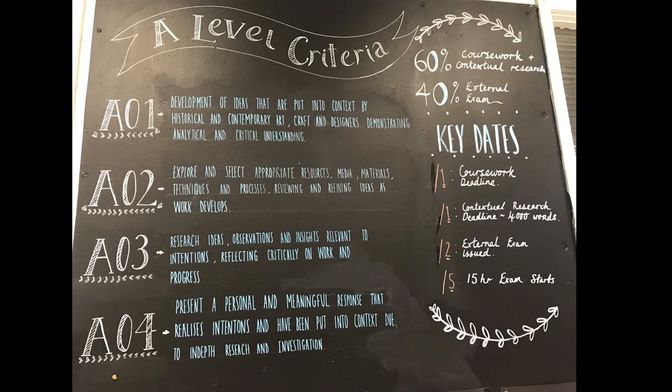Assessment objective 2 looks at how you explore this research through a variety of mediums and techniques. Assessment objective 3 is similar to assessment objective 2 but it focuses on how you reflect and evaluate your process of making. Assessment objective 4 is your final piece, where you showcase a realised response based on your in-depth research and experimentation relating to your theme.